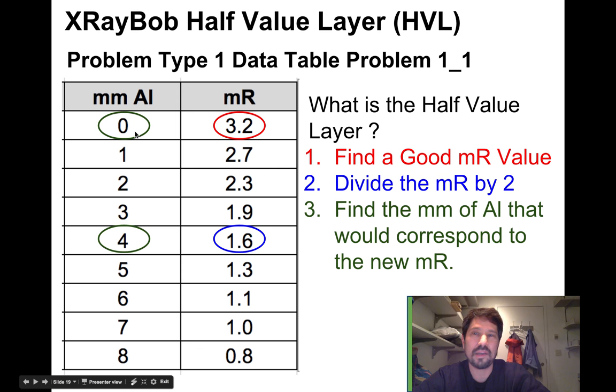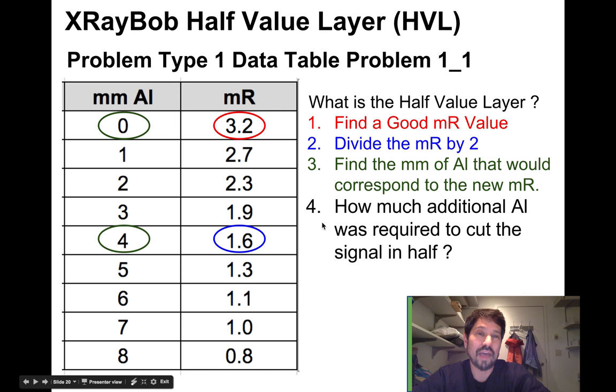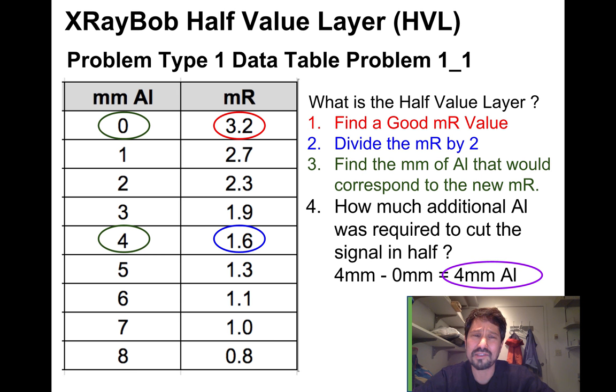So I can then say, four millimeters minus zero millimeters equals the additional four millimeters of aluminum, so that the additional aluminum required to cut that signal in half was four millimeters. So my HVL in this problem is four millimeters of aluminum. Let's circle it and make it obvious to our teacher.